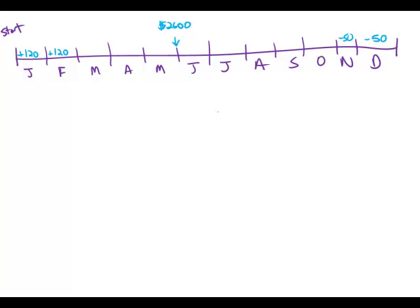Beginning in January of last year, Carl made deposits of $120 into his account for several consecutive months and then made withdrawals of $50 from the account for each of the remaining months last year.